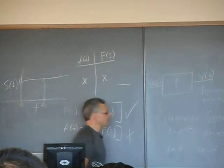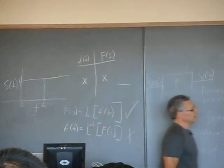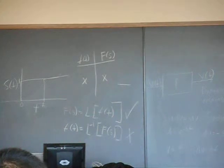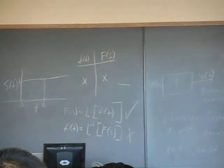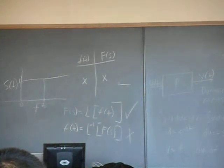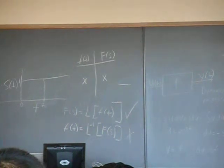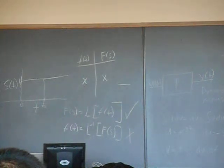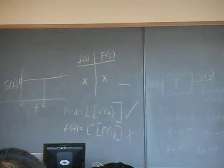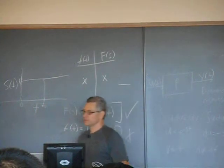Basically, this is two entries in the table. There's the time domain function and there's the corresponding Laplace transform. If you want to go the other direction, you start here and end up here. That's what the second line says — you can go either direction. In principle, you can perform the Laplace transform of any function you want by applying the definition. The inverse has to be done only from the table.